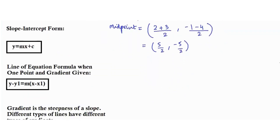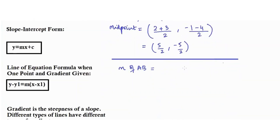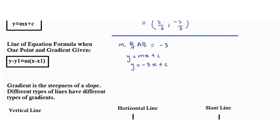Now moving on to slope-intercept form, using the same points A and B. We already found the gradient of AB is negative 3. So we do y equals mx plus c, replacing m with negative 3 to get y equals negative 3x plus c. Now we need to find the value of c.